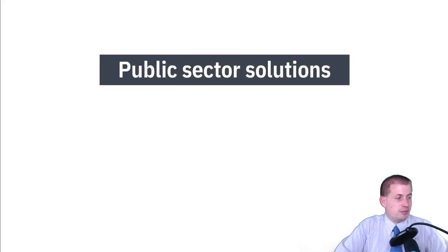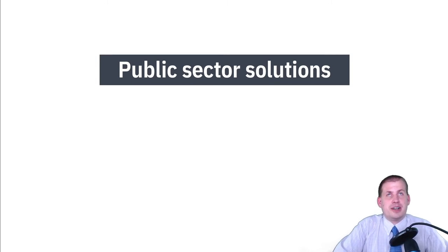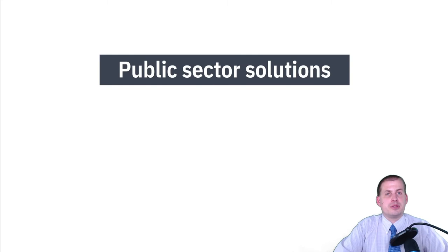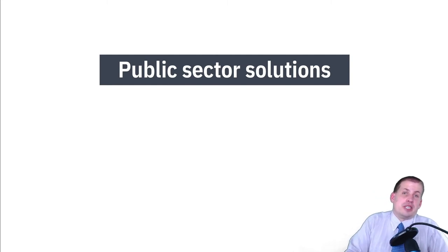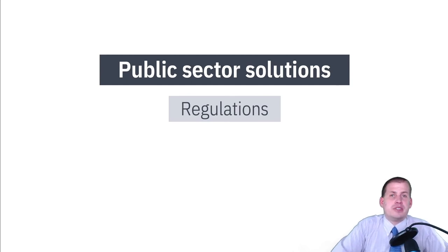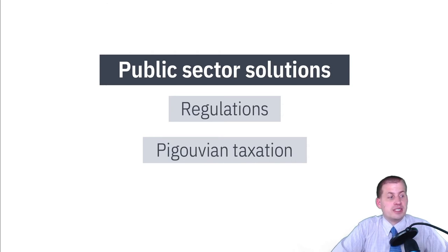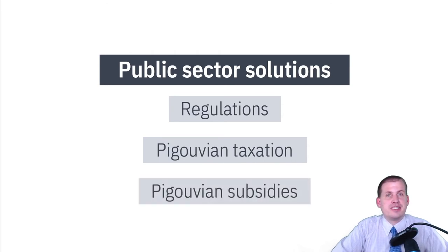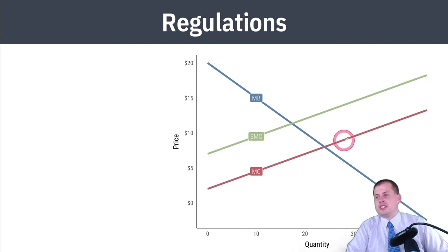So how do we fix it? We can look at the public sector rather than letting the private sector figure it out through the invisible hand, bargaining, or mergers. The government can set regulations that limit the amount of pollution or negative externalities. The public sector can use regulations, Pigouvian taxation, or Pigouvian subsidies. We'll talk about each.